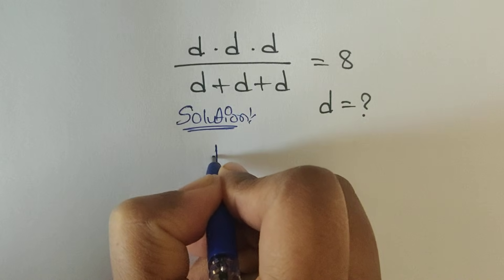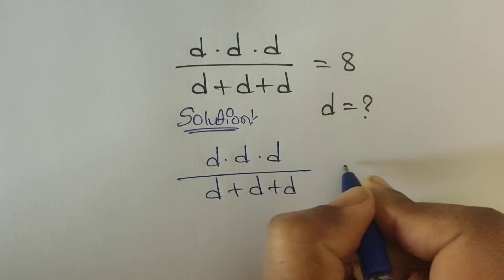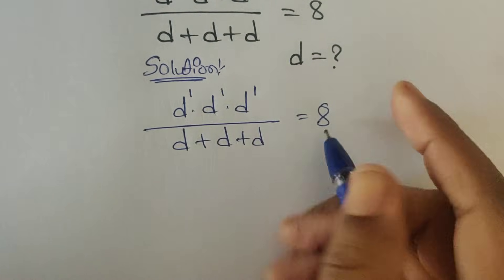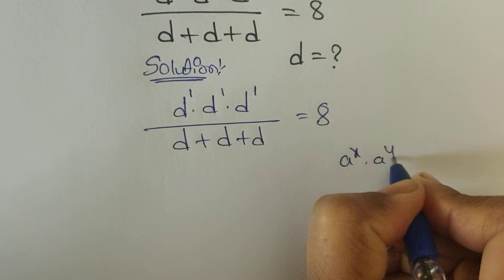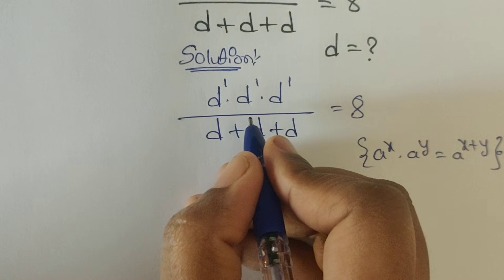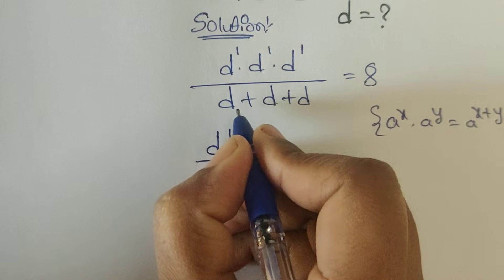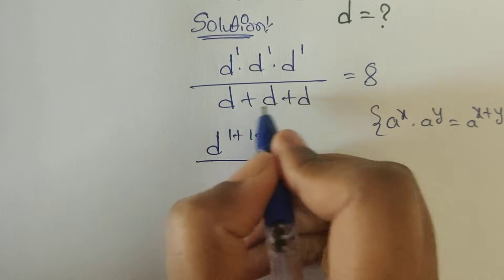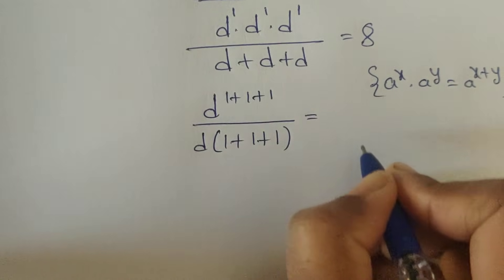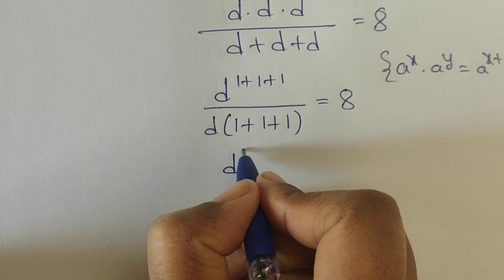So here we have given d times d times d divided by d plus d plus d is equal to 8. Now, a to the power of x times a to the power of y is equal to a to the power of x plus y. Applying this formula, we can write d to the power of 1 plus 1 plus 1 in the numerator, which equals d cubed. In the denominator, d plus d plus d has d as a common factor.